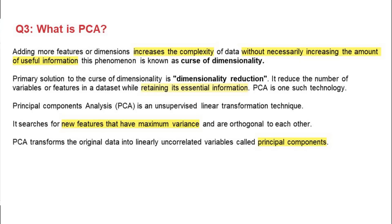Next question: what is PCA? Start with what is the problem and what is the solution. When we have too many features or dimensions in a dataset, the model complexity increases and not all features may be important. There may be variables which give less information and are not useful. This phenomenon is known as the curse of dimensionality.